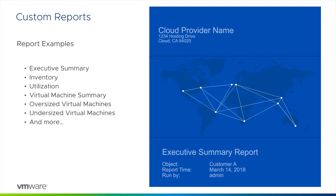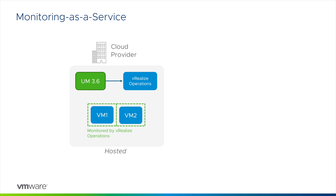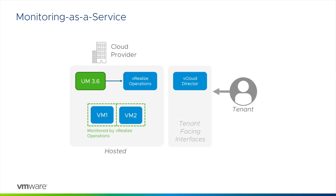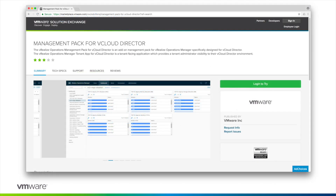Let's take a look at these two scenarios and see how Usage Meter 3.6 supports monitoring as a service. The first option is for partners that utilize vCloud Director. In this scenario, a partner can provide their tenants with access to a vRealize Operations multi-tenant portal. This is done by adding the vCloud Director management pack to vRealize Operations. You then deploy the tenant app appliance, which provides the interface that the tenants will see. Both of these can be found on Solution Exchange.